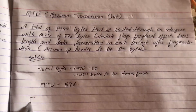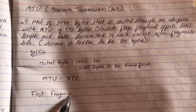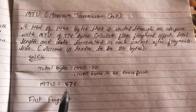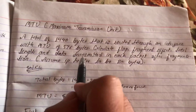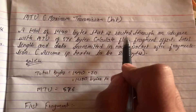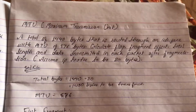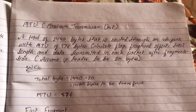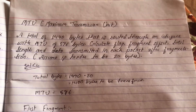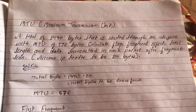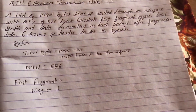Let's work through the first fragment. The MTU maximum transmission is 576 bytes. We need to calculate the flag, fragment offset, total length, and data transmitted. The flag for all fragments except the last is 1, and the last fragment has a flag of 0. So the flag of the first fragment is 1.